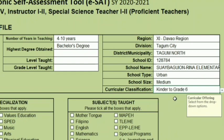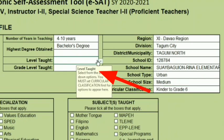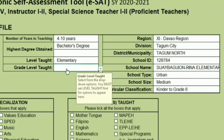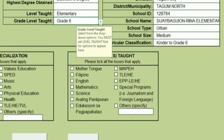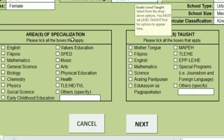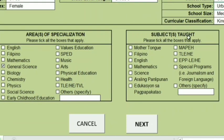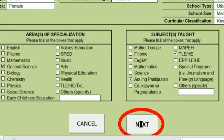Curricular classification is Kinder to Grade 6. Going back to 'level taught,' you can now select — Kindergarten or Elementary. Click the drop-down and select Elementary, then Grade 6. Proceed to the bottom for areas of specialization — check whichever subjects you handle, such as Araling Panlipunan. Check all your subjects, then click Next.